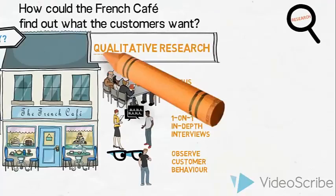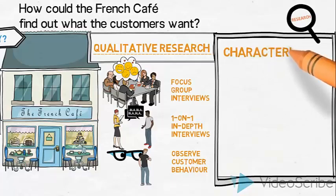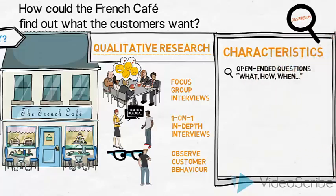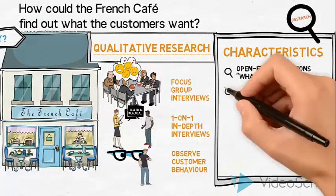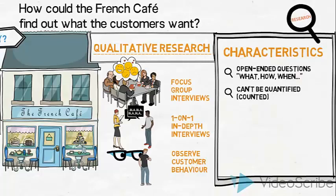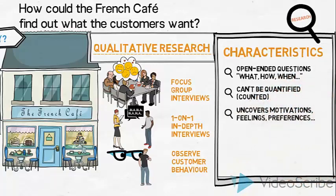We call these types of research qualitative research. Now let us list the characteristics of qualitative data. Qualitative data is based on asking open-ended questions — such as what, how, when, and so on — so that respondents can express themselves using their own words. Qualitative data cannot be quantified or counted; no two answers or observations are exactly the same, which is why they can't be counted. Qualitative research can be used to uncover people's motivations, feelings, attitudes, preferences and behaviours exactly as they choose to express them.